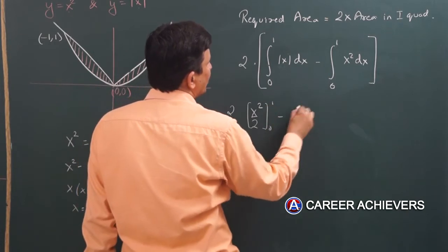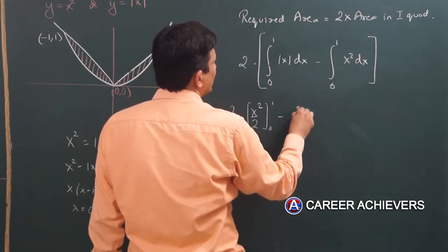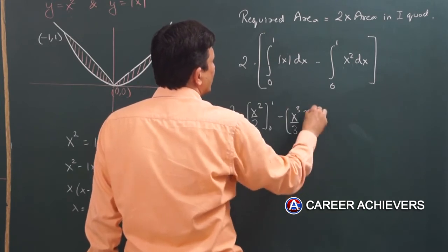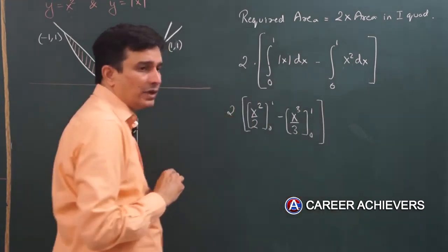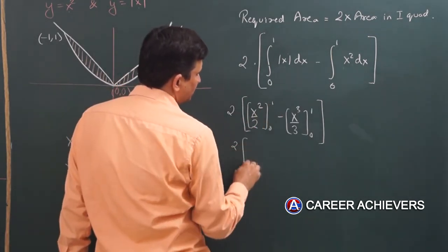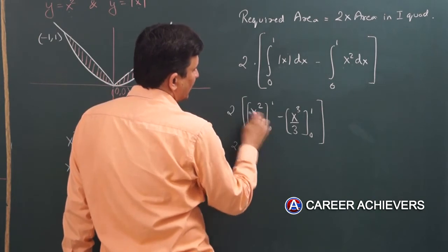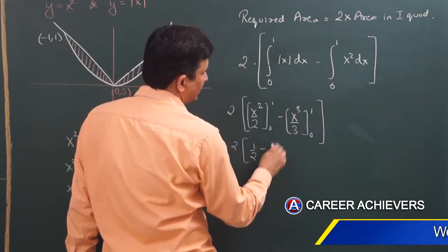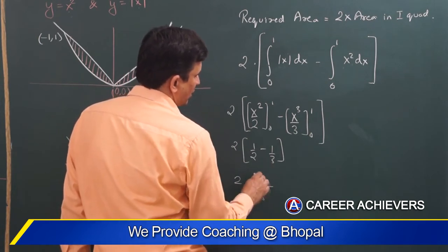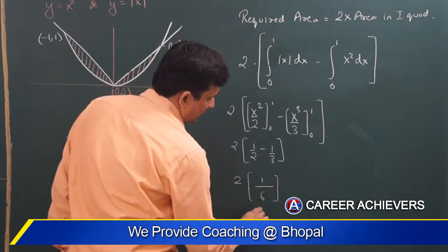Zero to one minus x square ka integration likhenge x cube by one by three, zero se one aur poore ko ek bracket ke andar likhenge. This will become one by two minus zero minus one by three which will be one by six.